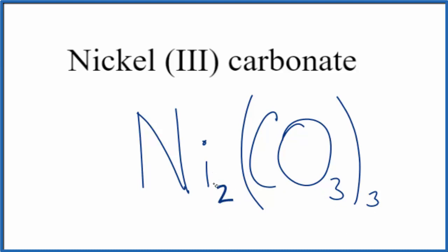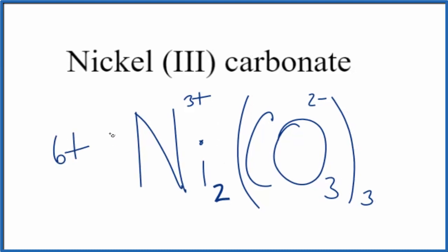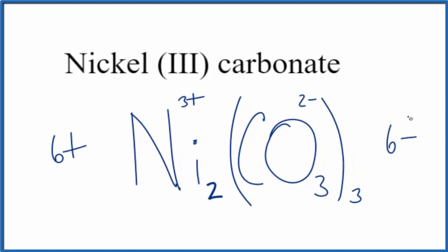Let's quickly check our work though. We said the nickel, that's going to be 3+, and the whole carbonate is 2-. 2 times 3+ is 6+, 3 times 2- is 6-. These numbers add up to zero.